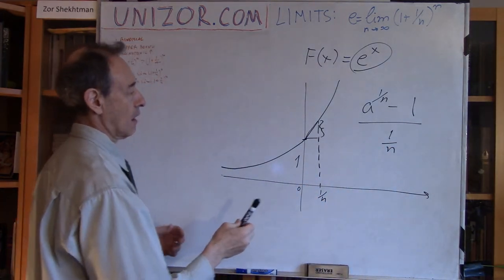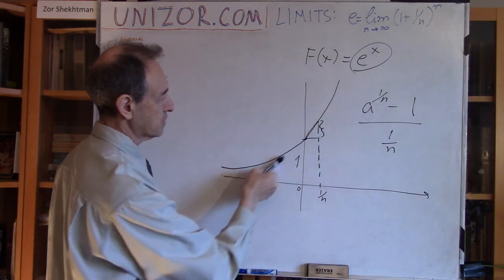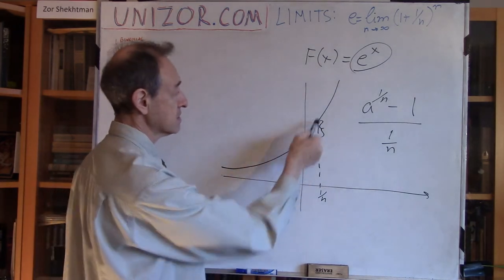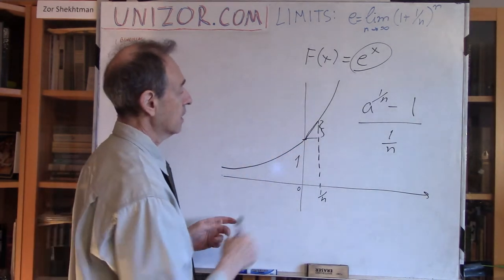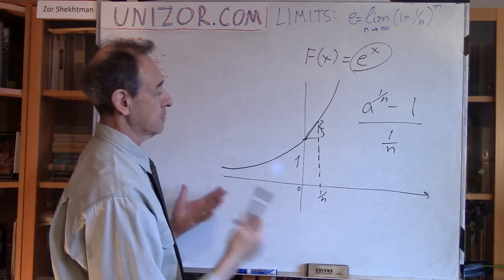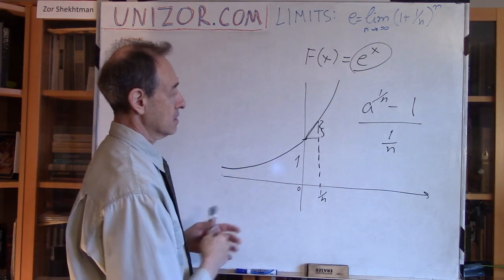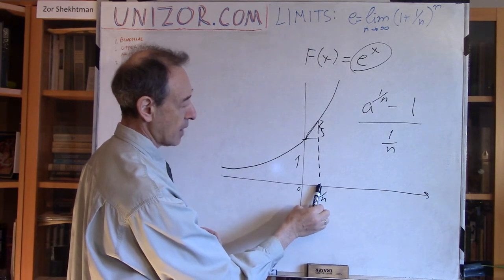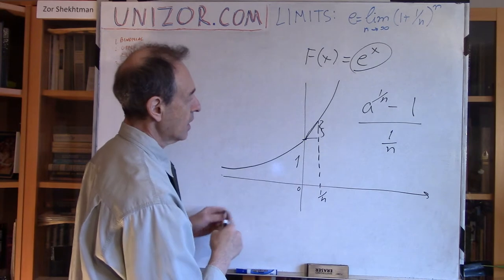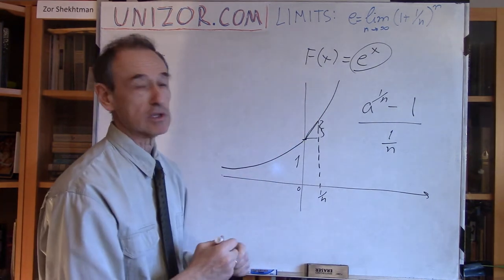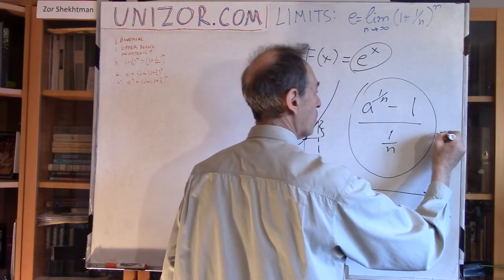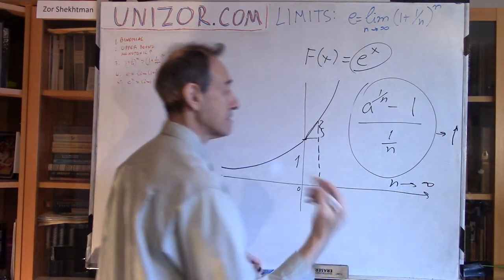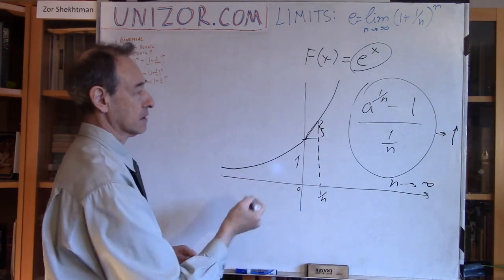Now, what does it mean that my tangential line would be at an angle of 45 degrees? It means that this particular ratio will be almost one, because at 45 degrees these are two legs of a right triangle and the legs are equal to each other. So the steepness can be characterized by this ratio. If I increase n so my point comes closer and closer to zero, my chord will be closer and closer to the tangential line.